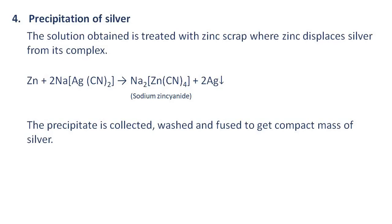Precipitation of silver: The solution obtained is treated with zinc scrap, where zinc displaces silver from its complex. The precipitate is collected, washed, and fused to get a compact mass of silver.